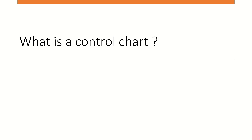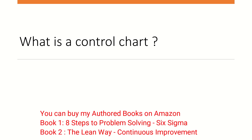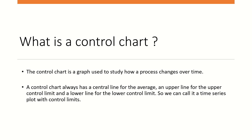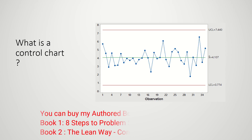Before we go into Minitab and understand how these charts are created, let's understand what is a control chart. A control chart is a graph that is used to study how a process changes over time. A control chart always has a central line for the average, an upper line for the upper control limit, and a lower line for the lower control limit. So we can call it a time series plot with control limits.